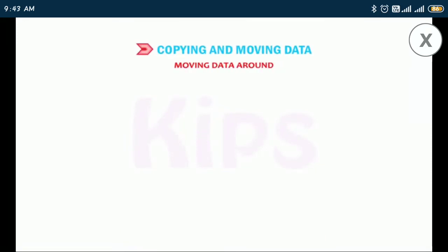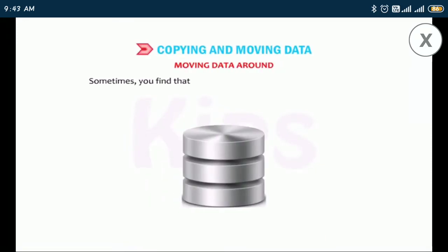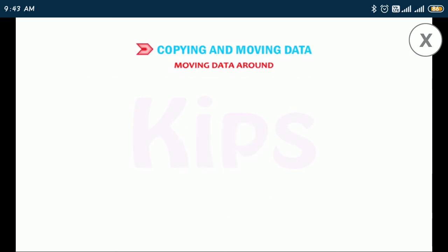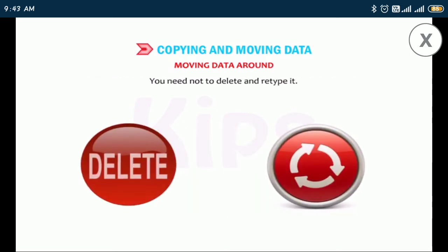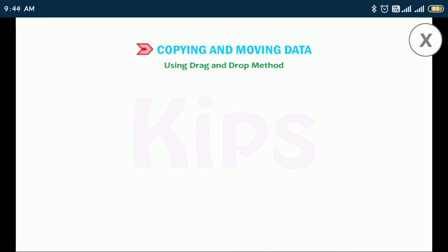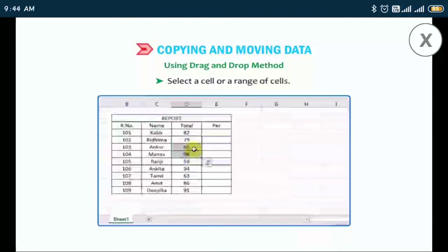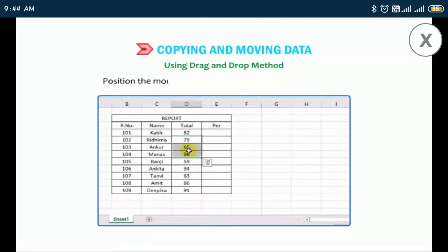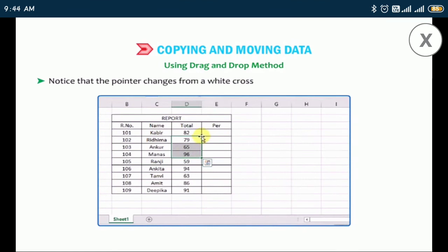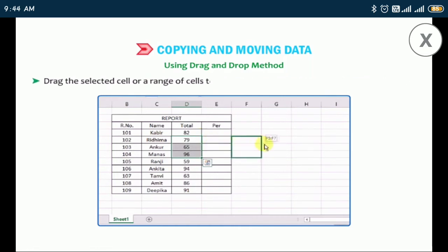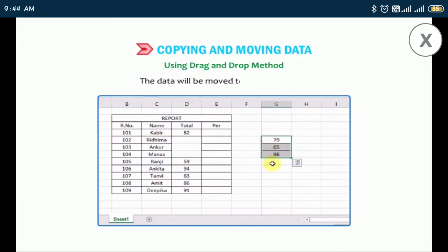Sometimes you find that the placement of data is not appropriate — you need not delete and retype it. Excel allows you to move data around the worksheet. To use the drag-and-drop method, select a cell or range of cells, position the mouse pointer at the edge of the selected cells. Notice that the pointer changes from a white cross symbol to a move pointer symbol. Drag the selected cell or range of cells to a new destination and release the mouse button. The data will be moved to the new location.